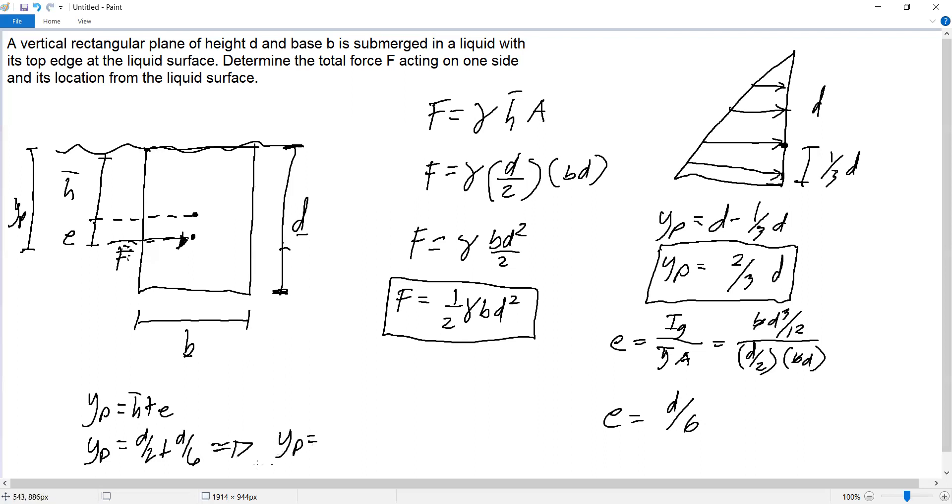yp equals, adding these with common denominator 6, so 3D plus D equals 4D over 6, or also equal to two-thirds D. So our answer is correct. This is the force and this is the location from the liquid surface.